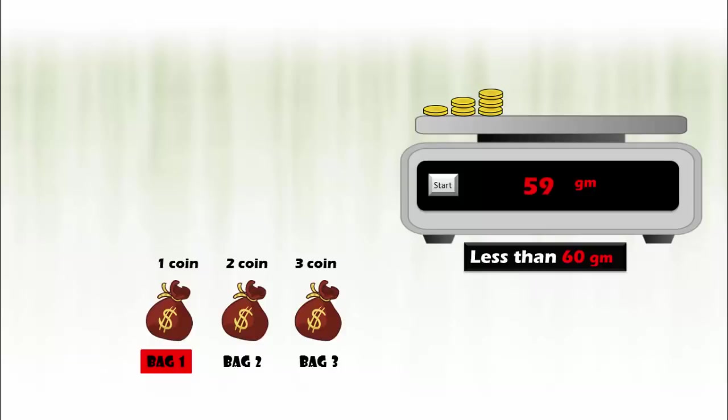The same way, we have two coins from bag 2, and if bag 2 is defective, then total weight will be two grams less than 60 grams. Finally, we have three coins from bag 3, and if bag 3 is defective, then total weight will be three grams less than 60, that is 57 grams. So based on the weight displayed, you can easily figure out the defective bag.